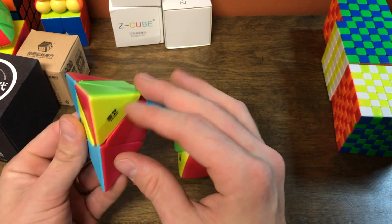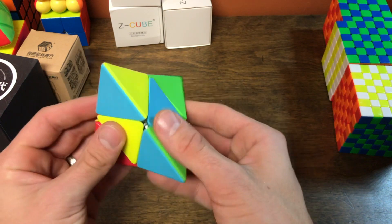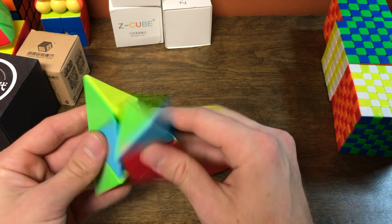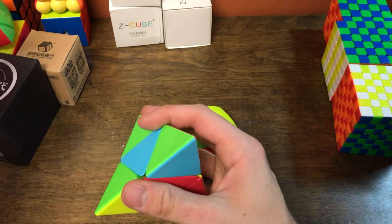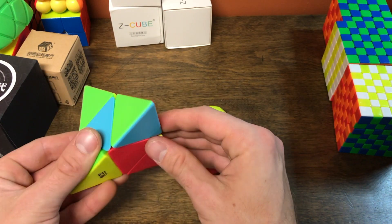Oh, I forgot to say. So this looks like the tips just move, but they don't. It's actually a 2x2 shape mod. Which actually I forgot to say in the 3x3, that's actually a 3x3 shape mod. So yeah, so it actually turns like a 2x2.